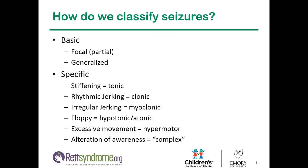Classifying seizures is very important for determining which medications to use. The basic classification is into focal or partial seizures and generalized seizures. If a child stiffens, that's called a tonic seizure; rhythmic jerking is called clonic; irregular jerking can be myoclonic; a child who becomes floppy during the seizure can be atonic or hypotonic. If they develop excessive irregular movements that look random, that can actually be a seizure called hypermotor activity. People often lose awareness during a seizure — that used to be called complex, and now we call it alteration of awareness.